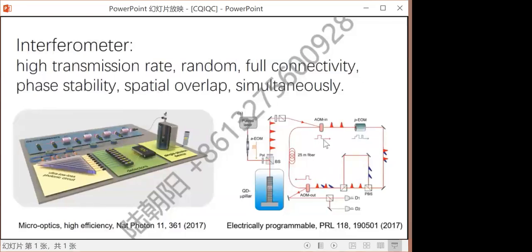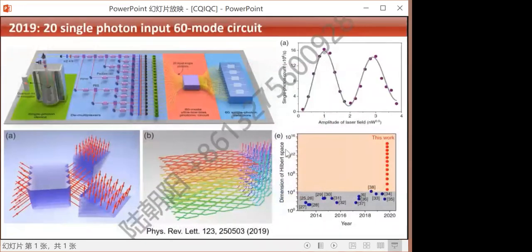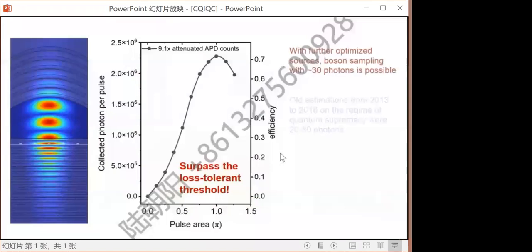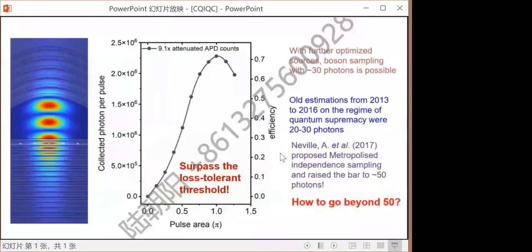In 2019, we scaled up to 20 photons and 60-mode three-dimensional interferometer, which have output state space dimension up to 10 to the power of 14. Currently, we continue to optimize the single photon source. We have now more than 15 million single photons per second, with system efficiency of about 72%. And by the way, this surpasses the loss-tolerant threshold as being raised by Taylor Rudolph and his colleagues, considering purely photon loss, not static error.